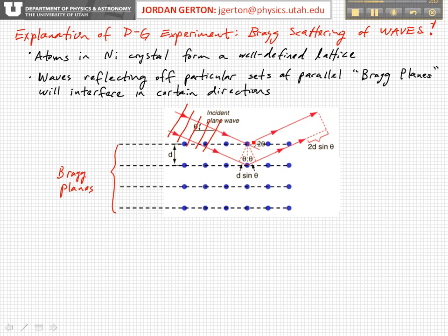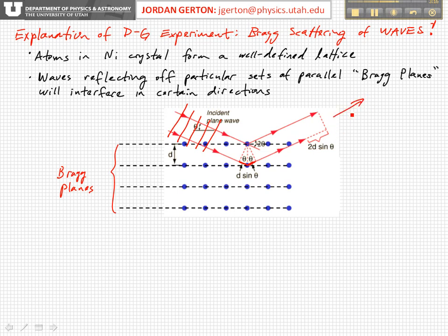If part of a wave reflects off the top Bragg plane and another part reflects off the next Bragg plane down, the wave reflected from the second plane will have traveled a greater distance — by an amount 2D sin θ, where this distance shown here is D sin θ. For particular angles, if 2D sin θ equals an integer multiple of the wavelength, you get constructive interference in that direction and would expect to see higher intensity in that direction compared to others.